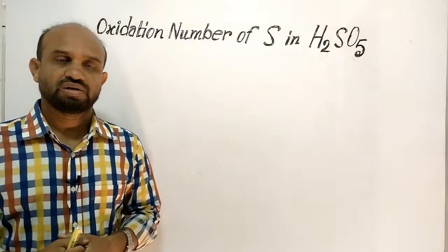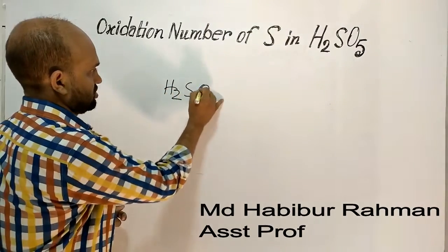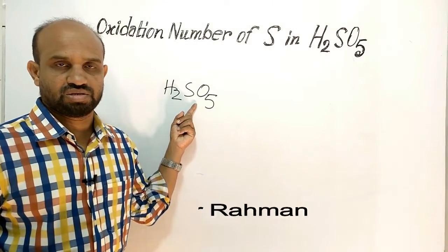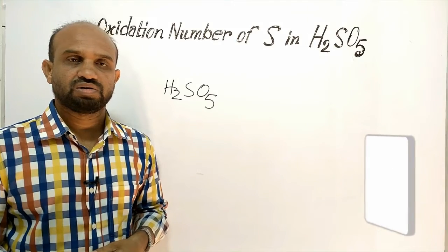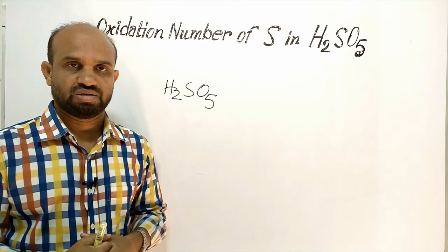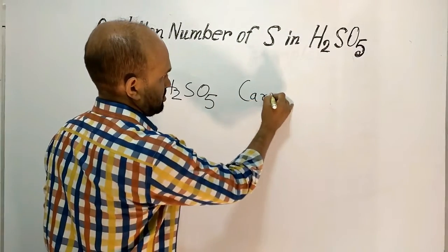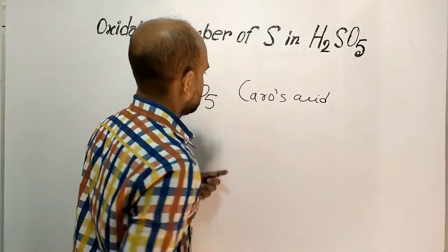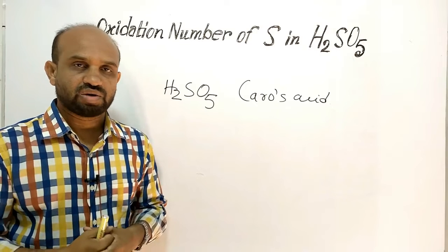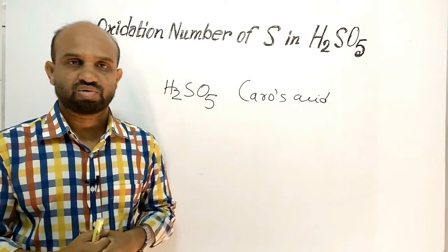We are finding the oxidation number of sulfur in Peroxymonosulfuric acid, also called Peroxosulfuric acid or Peroxomonosulfuric acid. It has another name, Caro's Acid, named after the German chemist Heinrich Caro, its inventor. That is why it is sometimes called Caro's Acid.